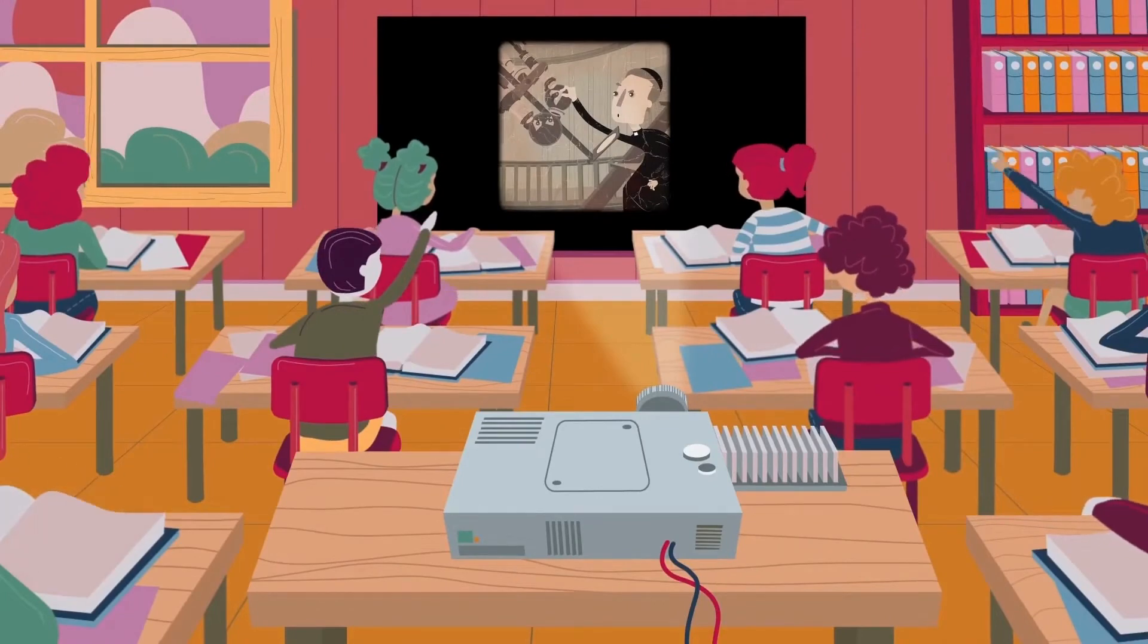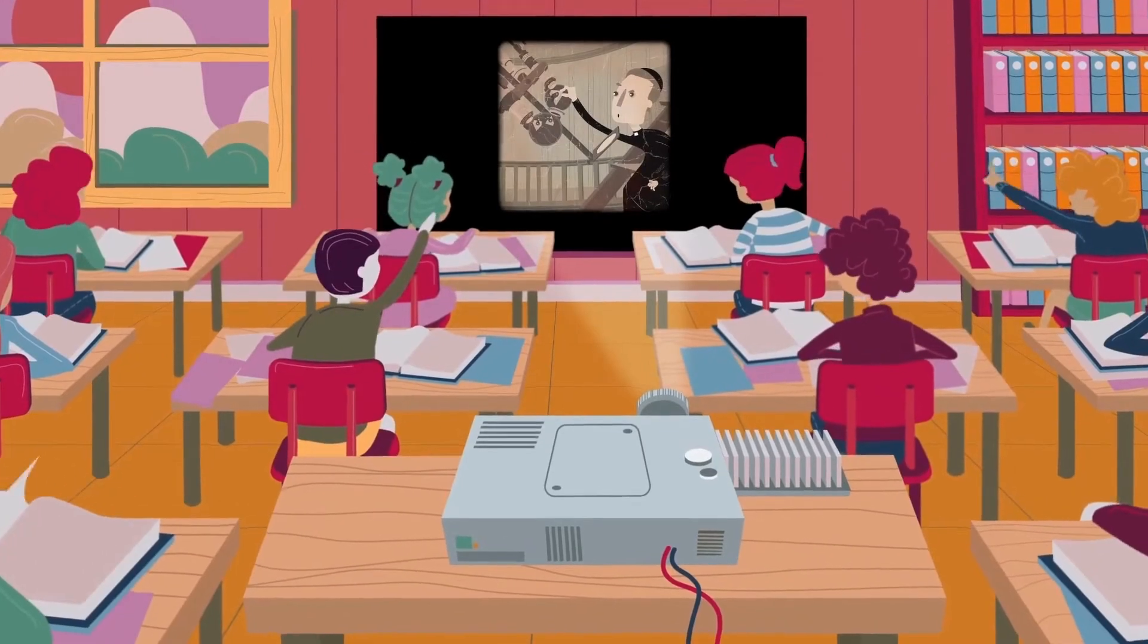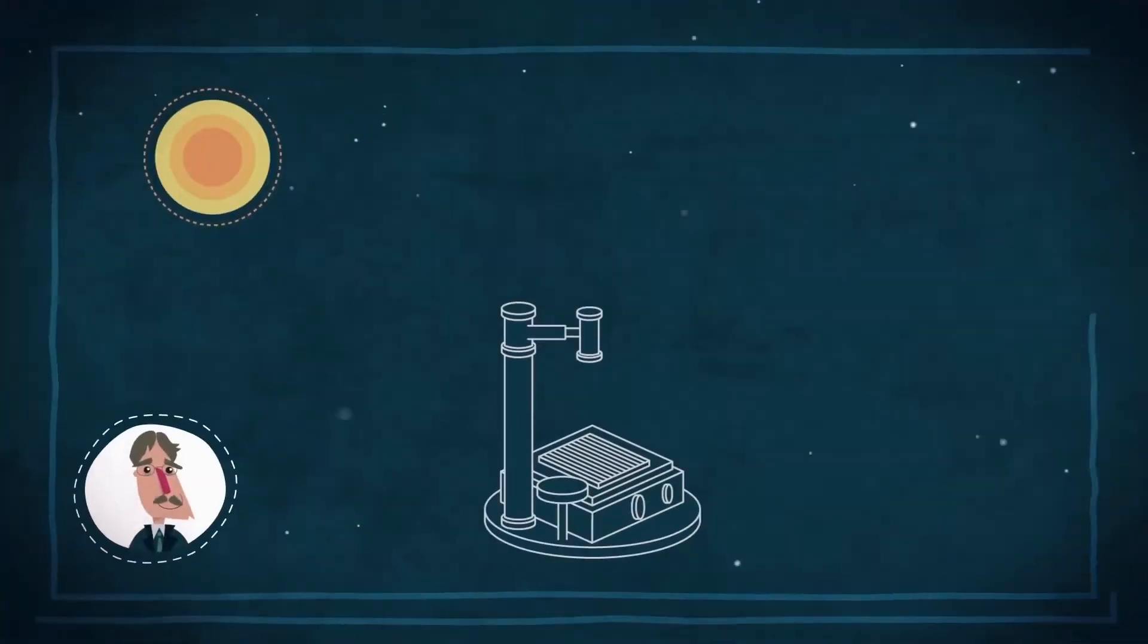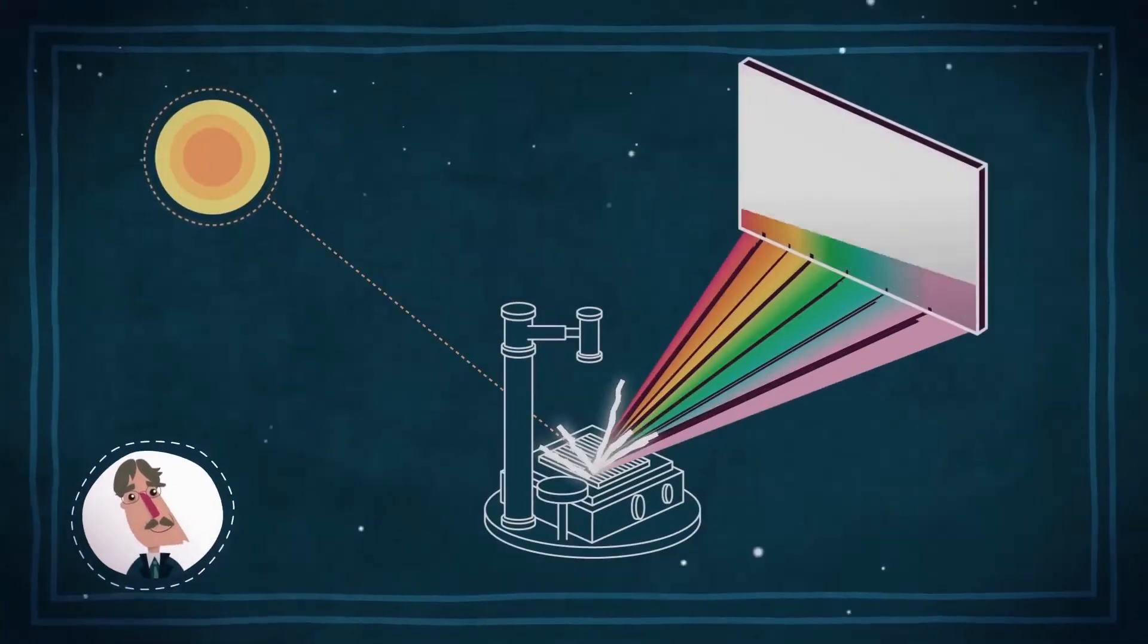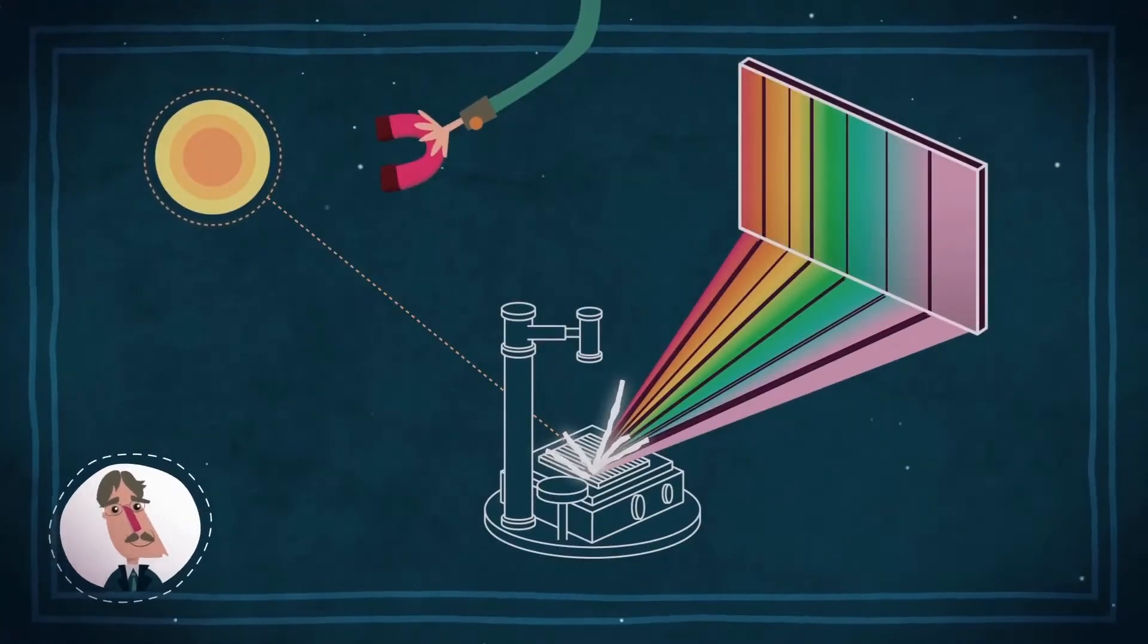¿Espectroscopía? Sí, espectroscopía. La técnica que usan los astrónomos para conocer la composición, el campo magnético y otras características del Sol.